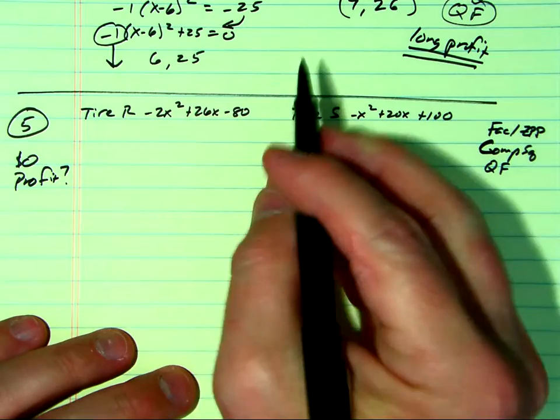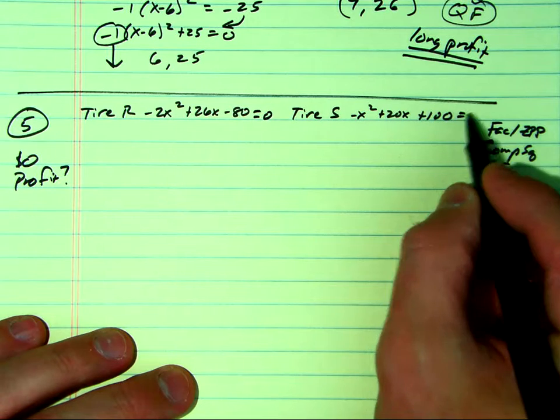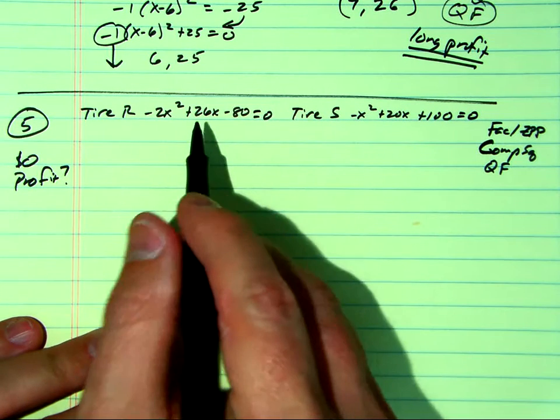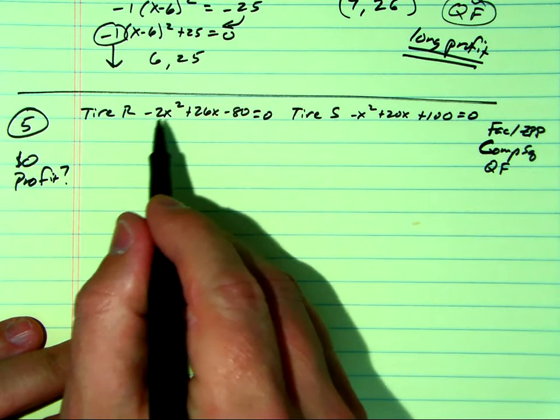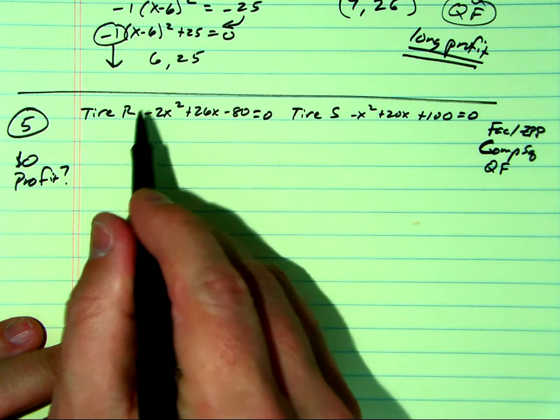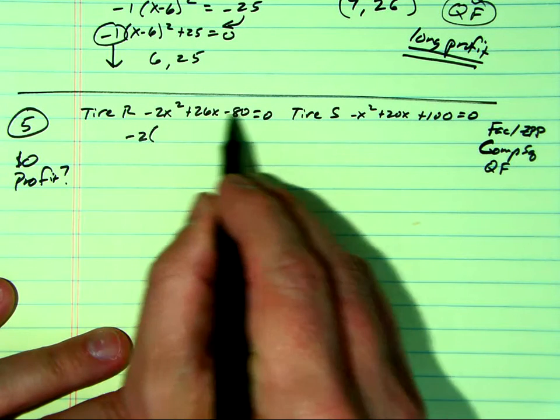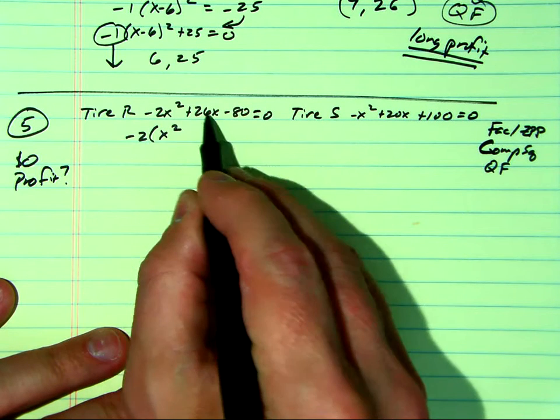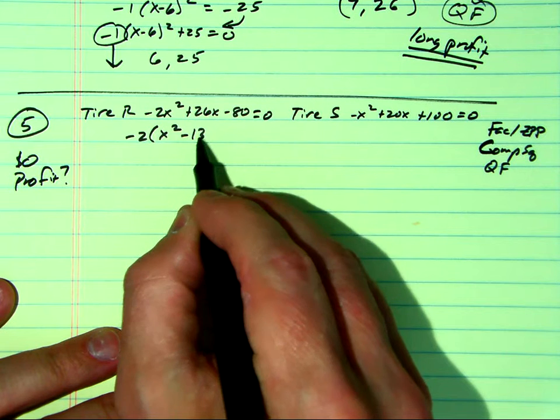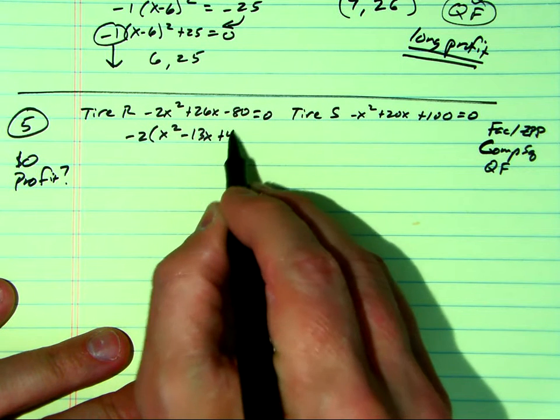So we're going to set these both equal to zero. Let's see if these factor. Boys and girls, when you see a number out in front, I want you to try to get rid of that as a GCF. If I divide by negative 2 on all these terms, it just becomes x squared minus 13x plus 40.